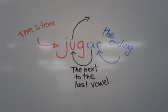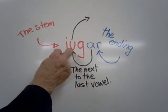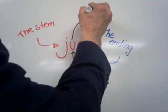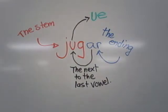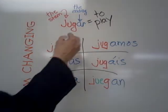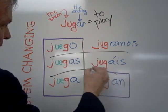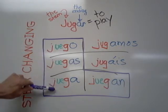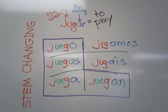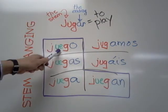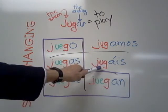And it's always the next to the last vowel — here is the last vowel, we go to the next to the last vowel. In stem-changing verbs, that's always the one that changes. And with jugar, the U changes to UE. It doesn't do it in all the forms — it only does it within the boot. You'll notice the next to the last vowel, which is U, changes to UE inside the boot, but not on the outside.